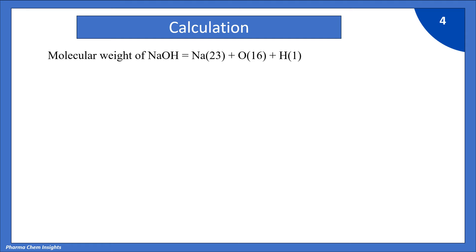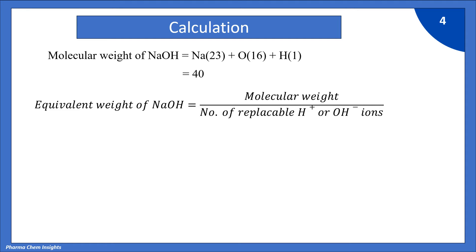The molecular weight of NaOH is equal to the sum of atomic weights: sodium (23) + oxygen (16) + hydrogen (1) = 40. Similarly, the equivalent weight of NaOH = molecular weight / number of replaceable OH⁻ ions = 40 / 1 = 40, because NaOH has one replaceable OH⁻ ion.